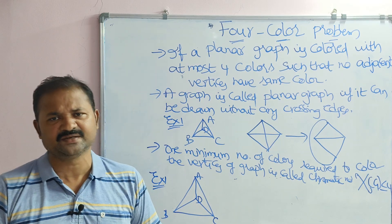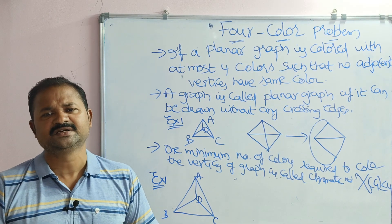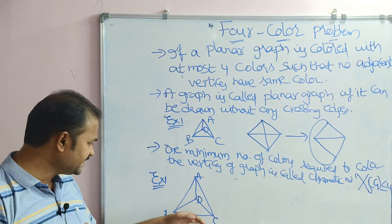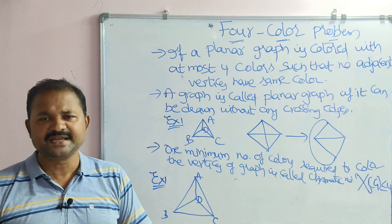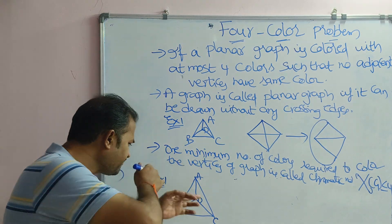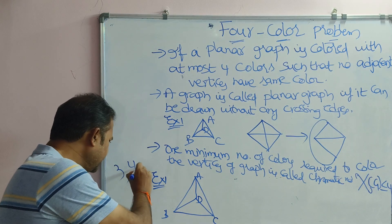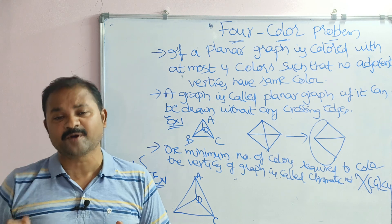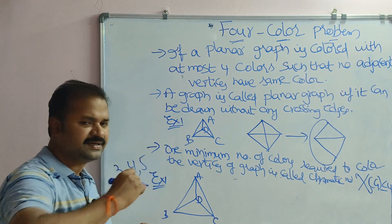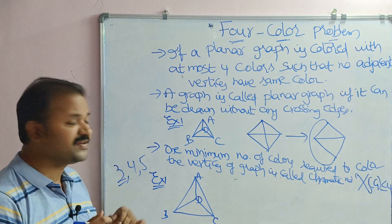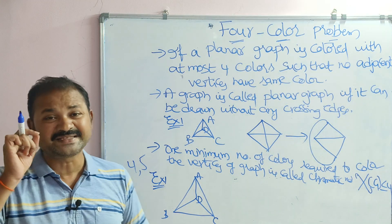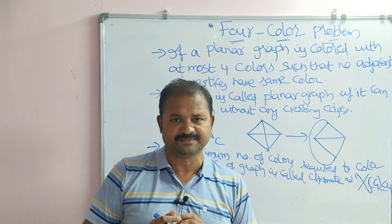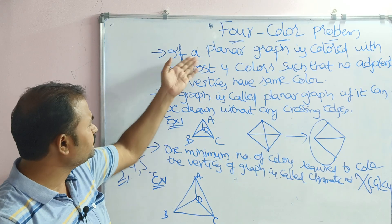The chromatic number is the minimum number of colors required to color the vertices of a graph. For example, if a graph can be colored with three, four, or five colors, the minimum is three, so the chromatic number is three. The chromatic number is denoted by the symbol ψ(G).